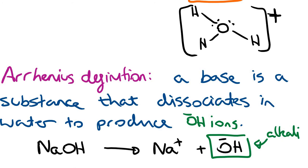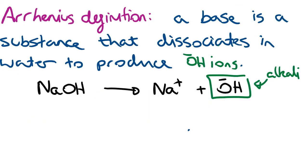To briefly explain: 'dissociates' means breaks apart — you have an original species that just breaks apart to form two other things. Now we're going to look at acids and consider the difference between a strong acid and a weak acid.